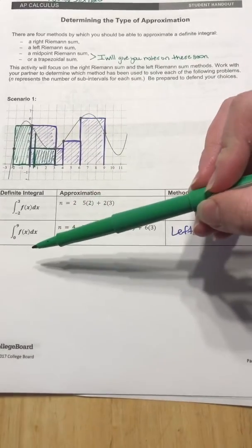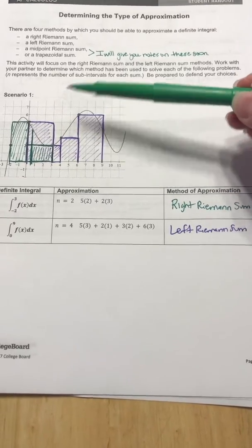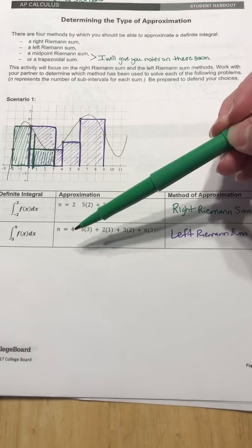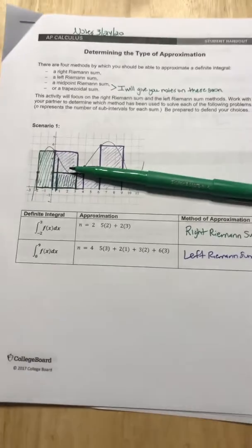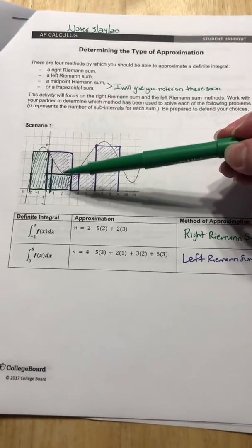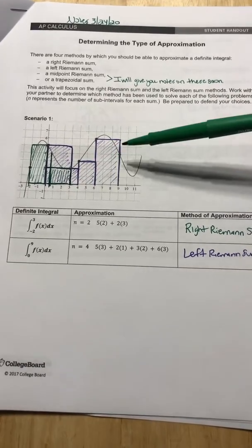Now if you look down here we're going from zero to nine. So right here in the purple, it has four sub-intervals. So you have four sub-intervals, and again they don't have to be equal.